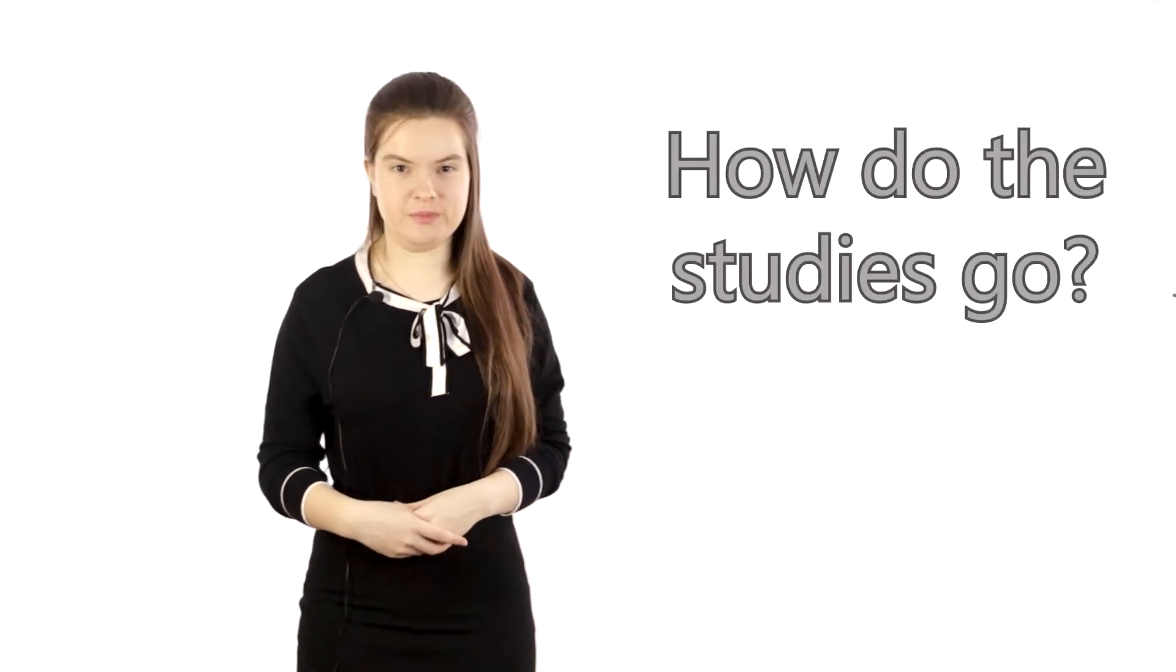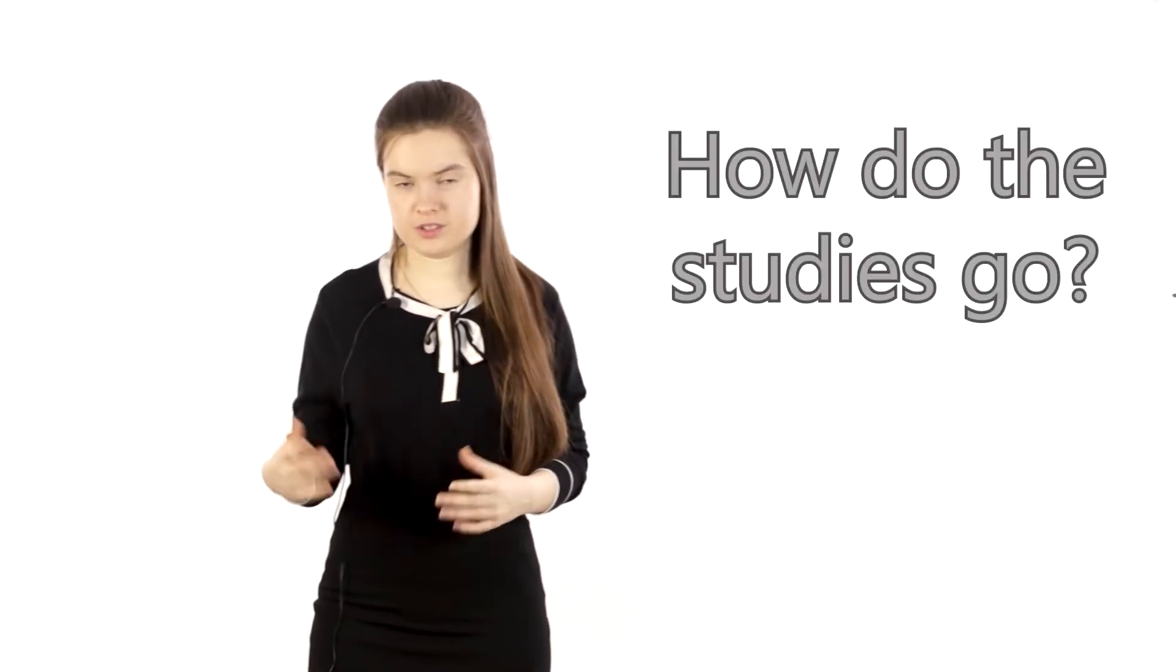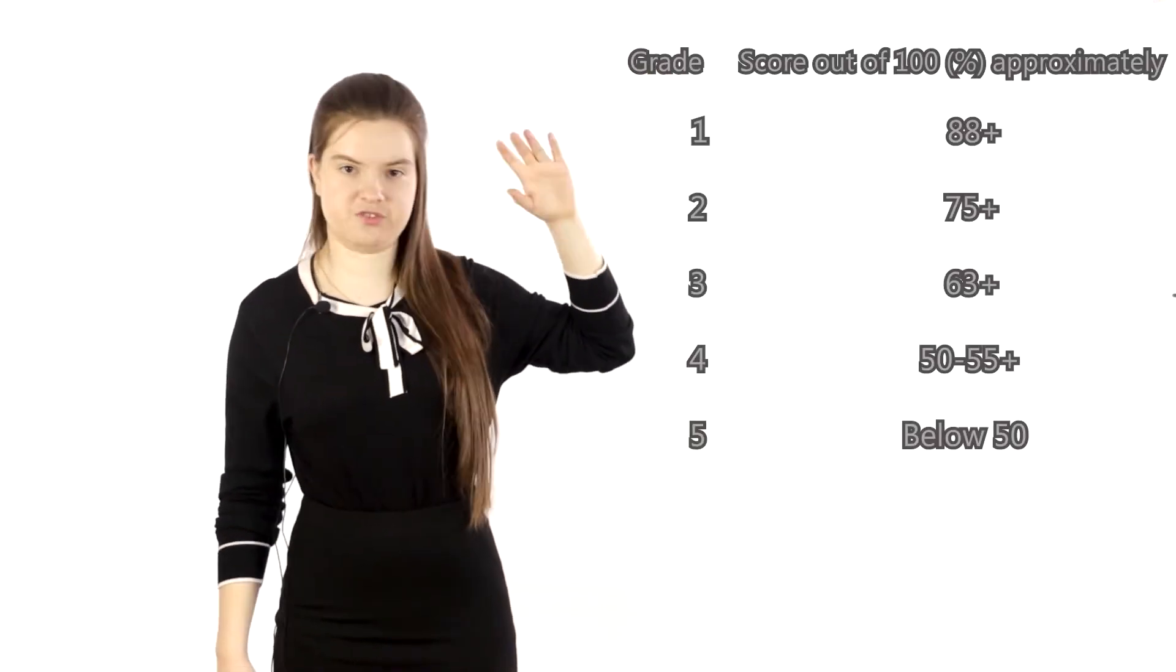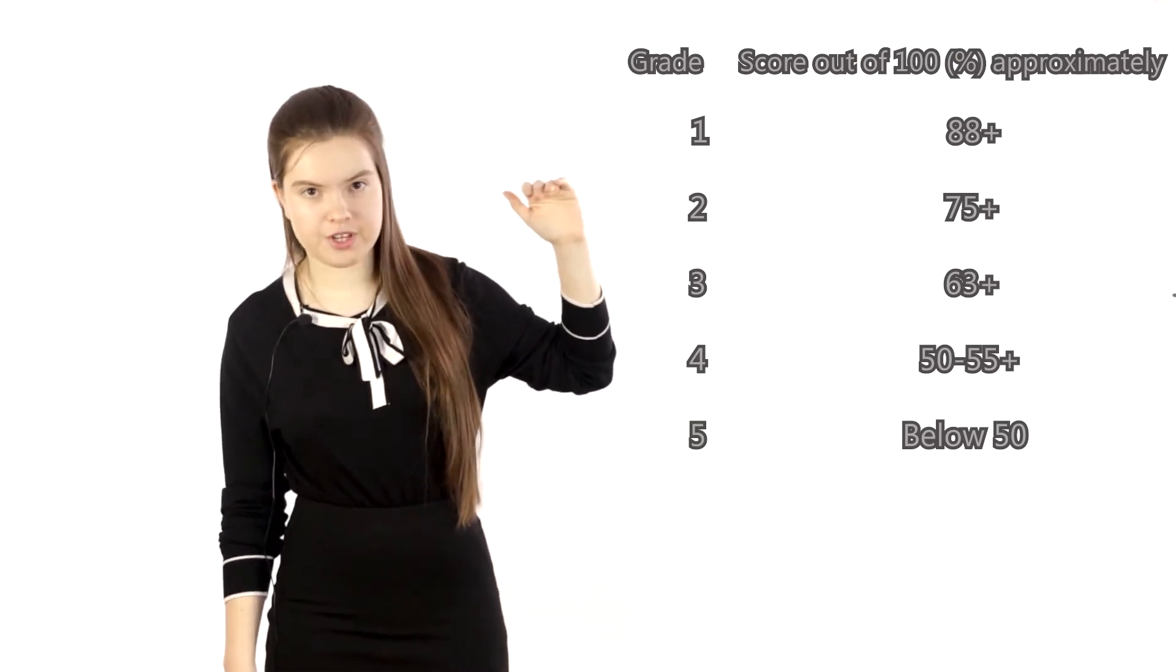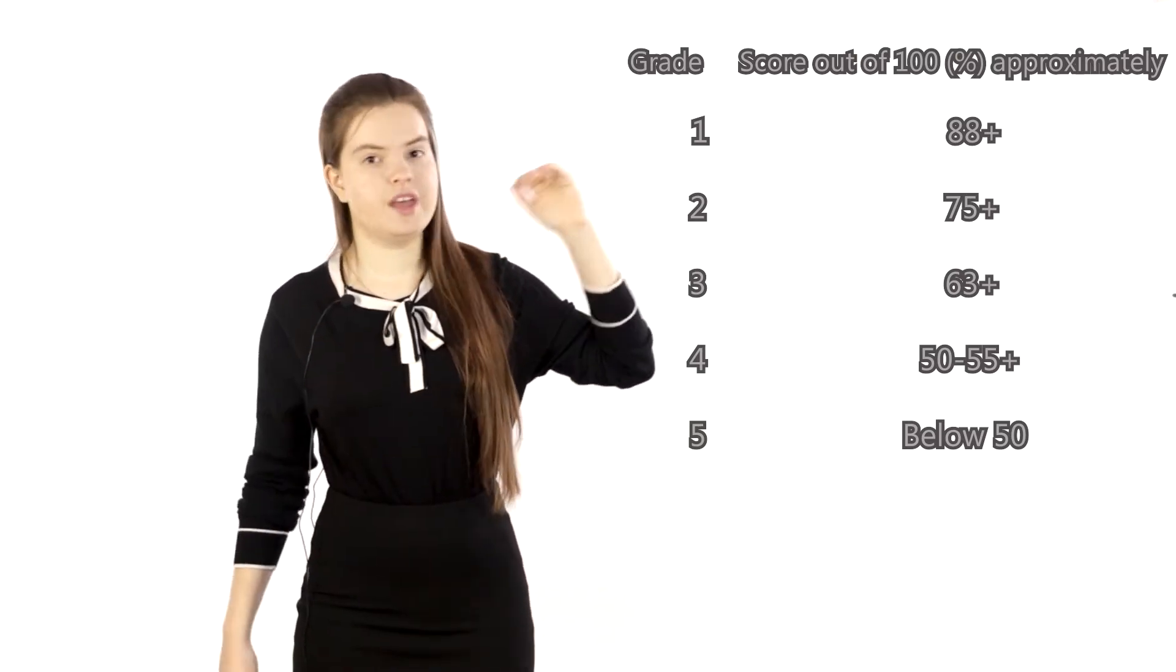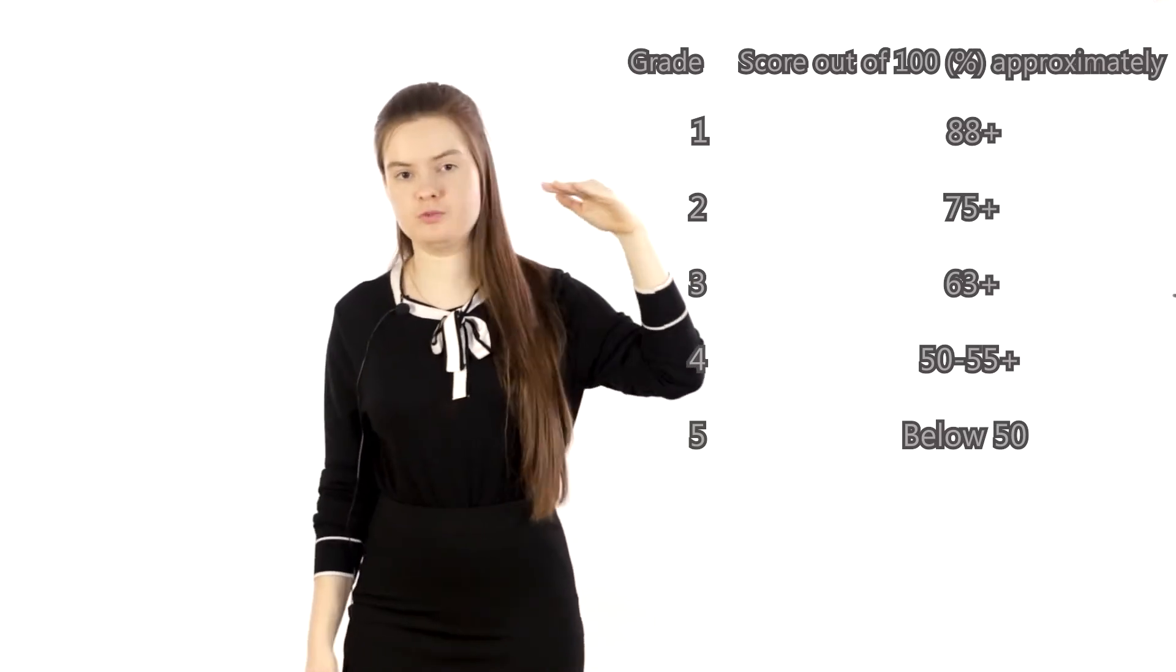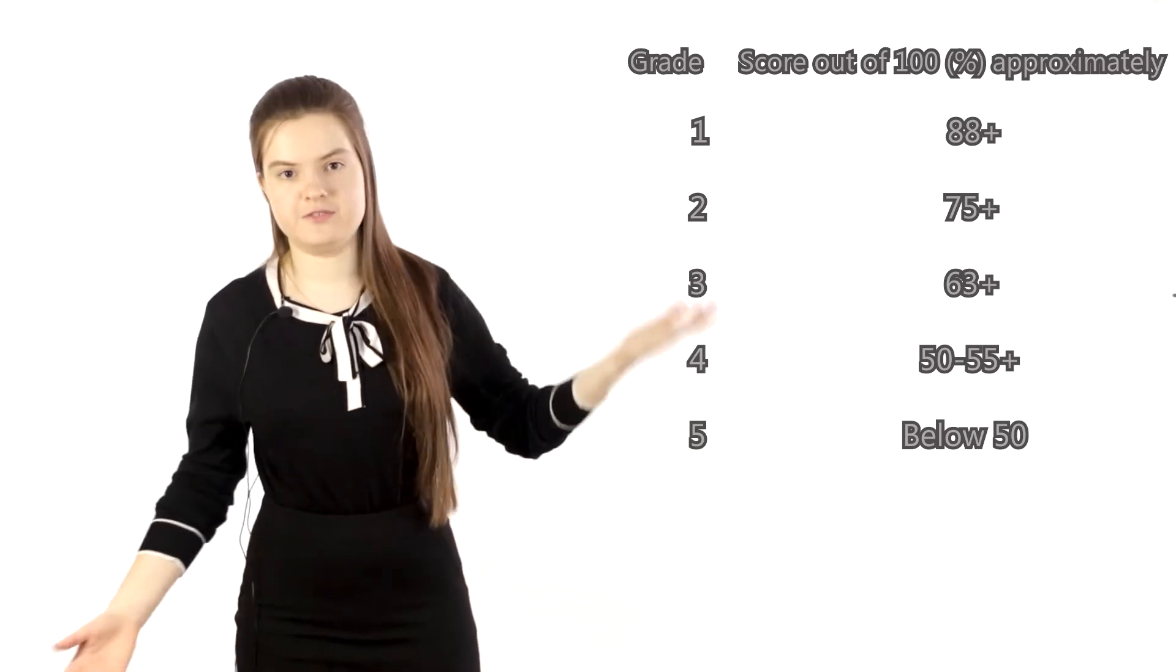And how do the studies go? How easy is it to get a nice grade? Well, it's hard to fail, I would say, but it's also very hard to get a one. So that we are on the same page, the grades go from one to five. One is like 90% total points out of a hundred. Then a two is like 75% total points. A three, it's around 65. A four, that's around 55 points. That's the pass, the minimum grade you need to pass a course, a four. And then the five, it's failed below 50%.